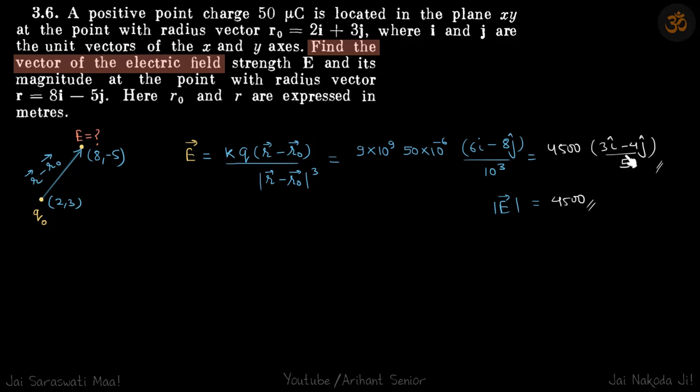Times (3i cap minus 4j cap) divided by 5. This is a unit vector, so obviously the magnitude is just 4500. These are our answers.